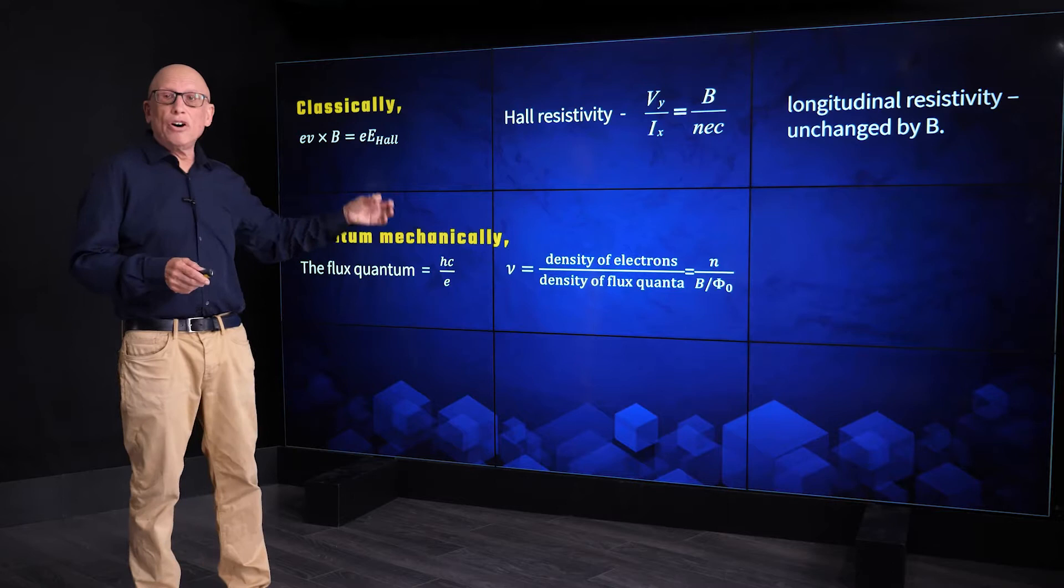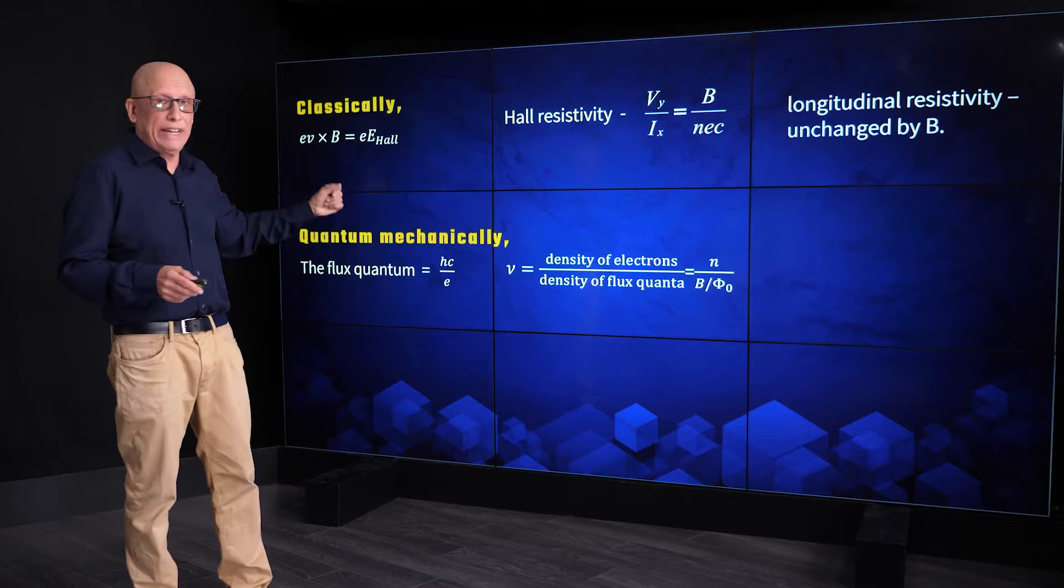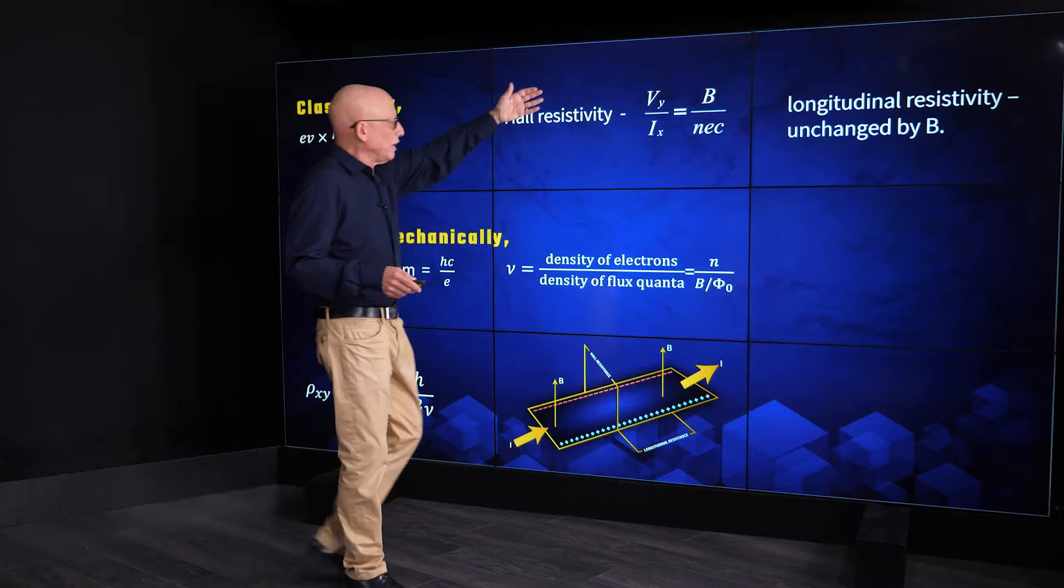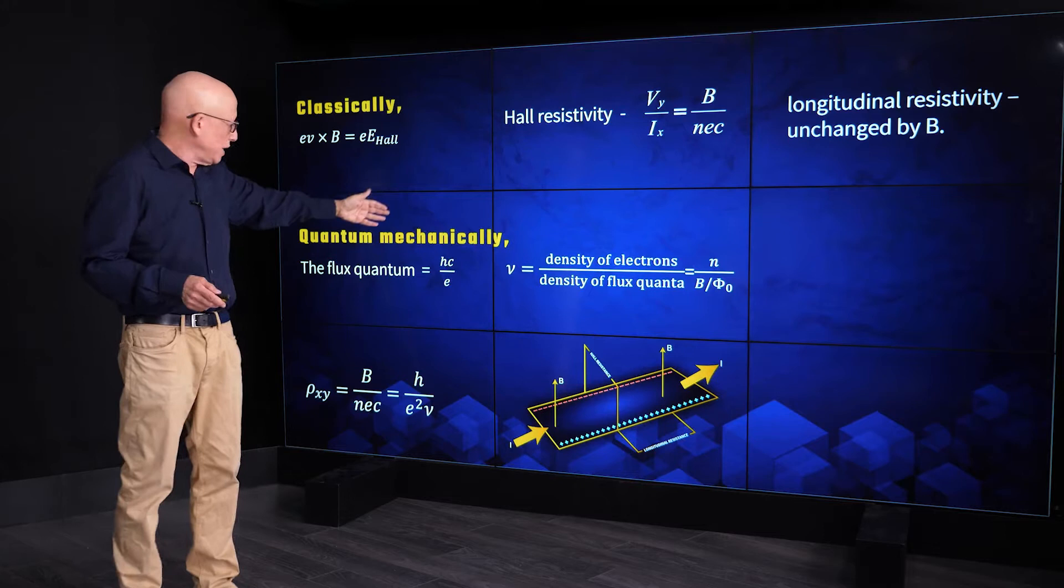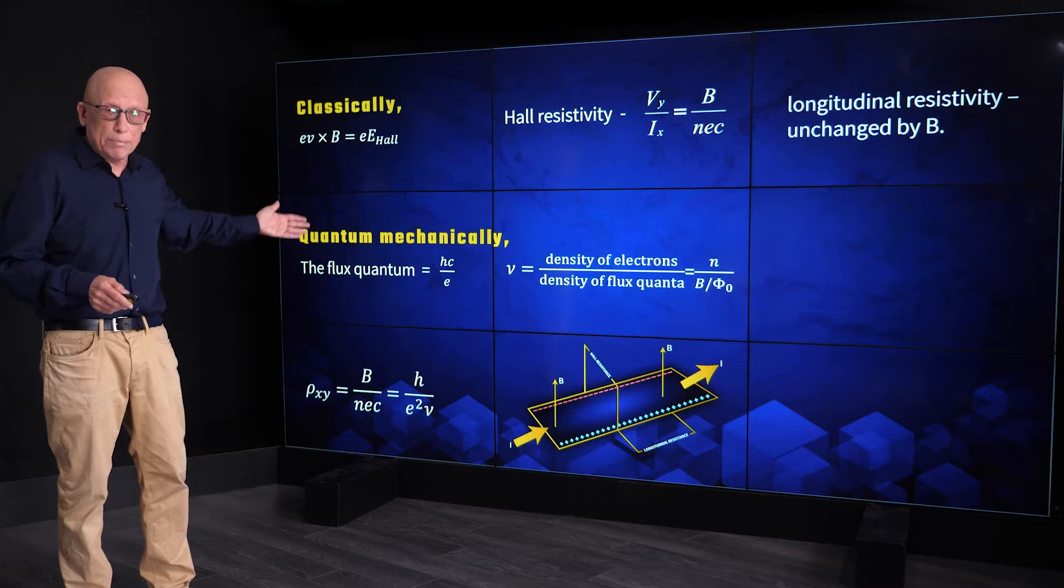And second is a dimensionless number whose importance cannot be overstated: nu, the ratio of the density of electrons n to the density of flux quanta, which is b over the flux quantum phi naught. Phi naught is hc over e.